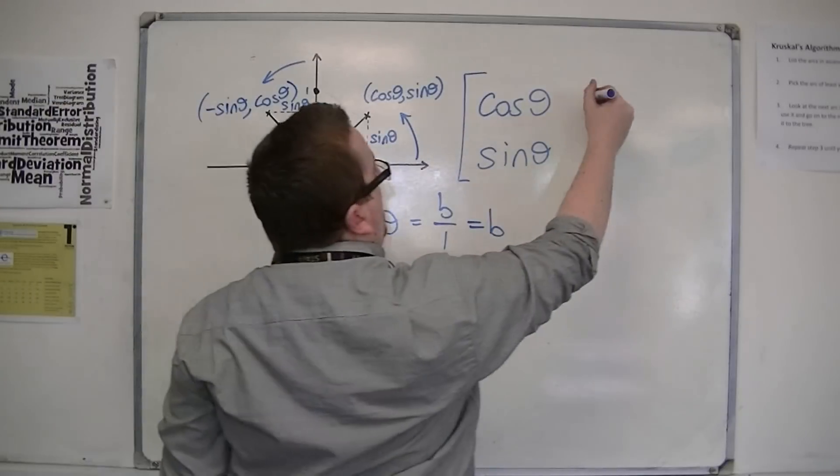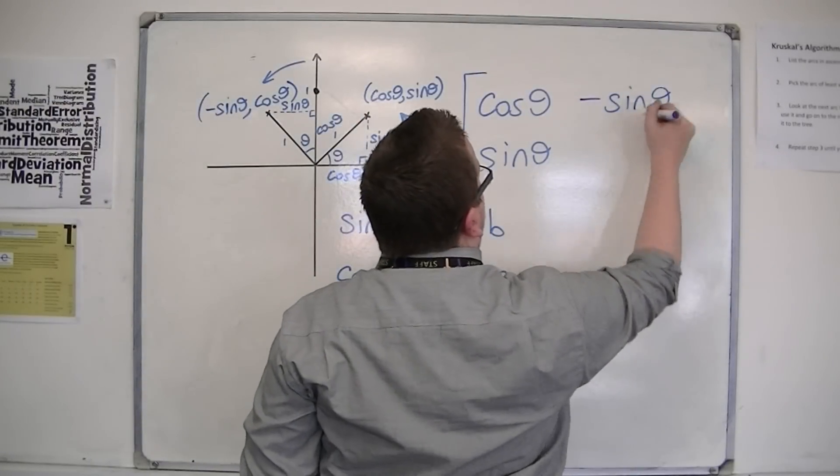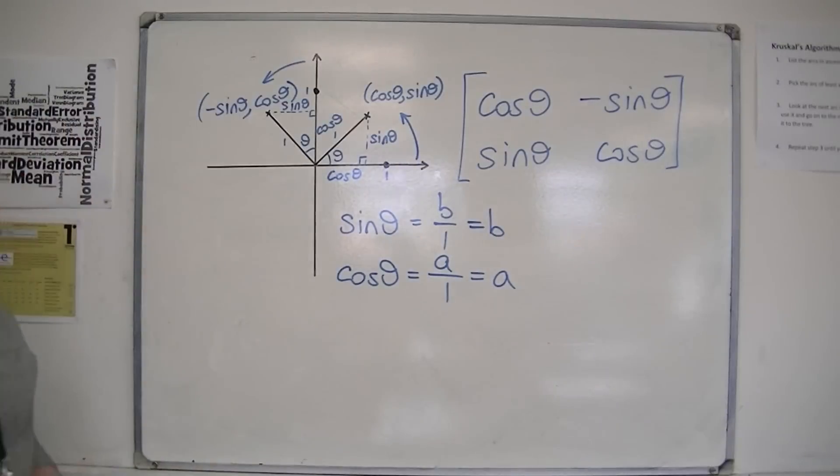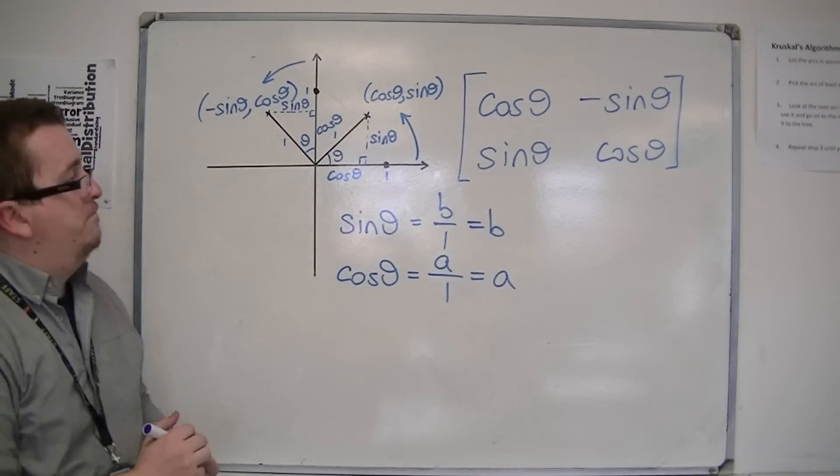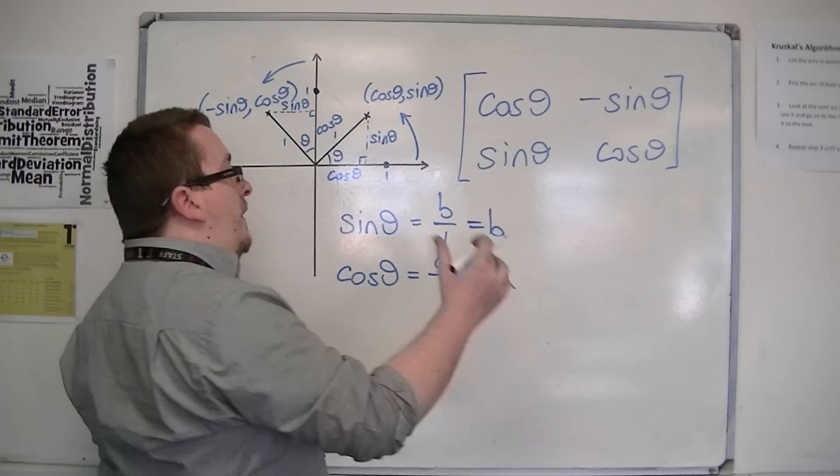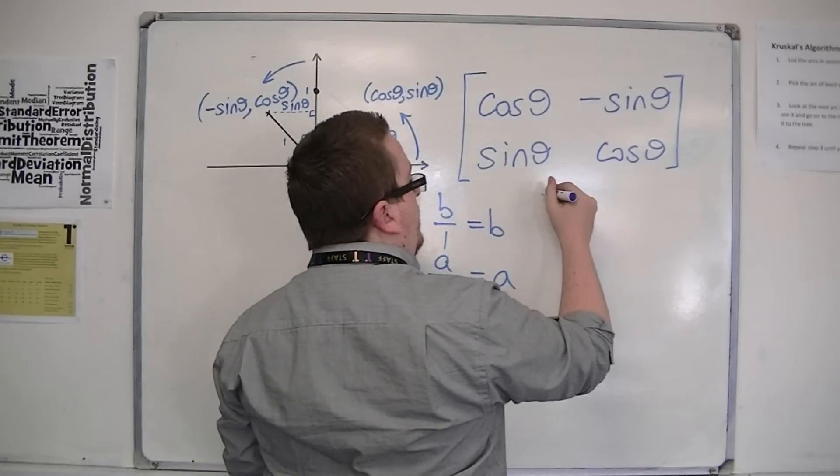So that is the second column of my matrix. So this matrix defines a transformation that